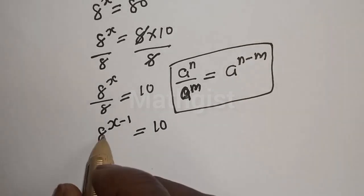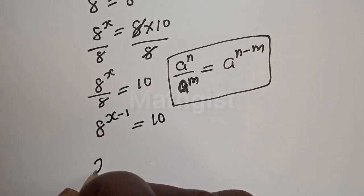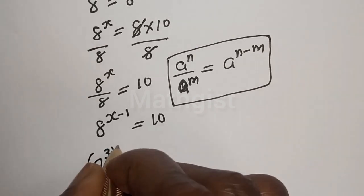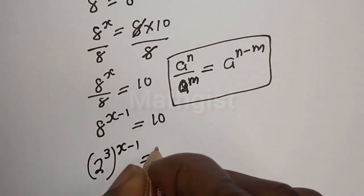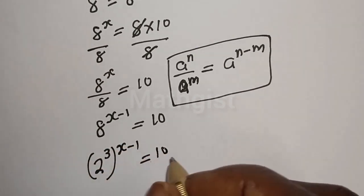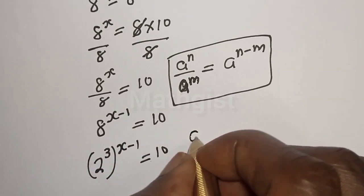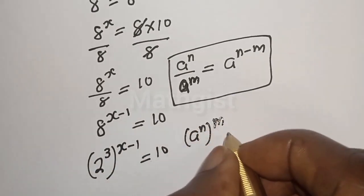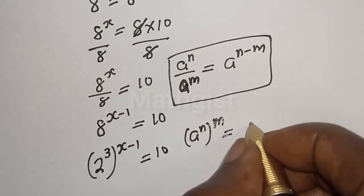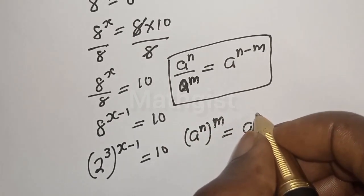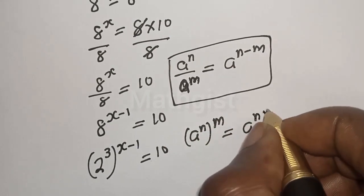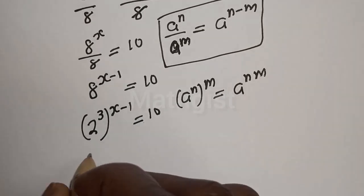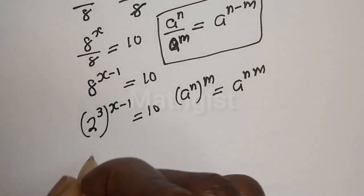Now, 8 raised to the power s minus 1 can be written as 2 raised to the power 3, bracket s minus 1, equals 10. Take note that if you have a raised to the power n, raised to the power of m, this is equal to a raised to the power n times m.